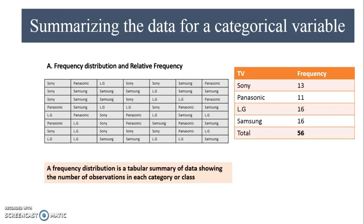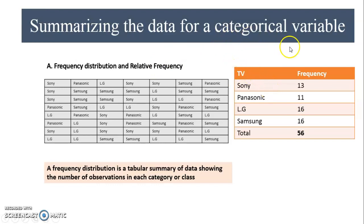Frequency distribution is a tabular summary of data showing the number of observations in each category. This tabular summary has the TV brand as the first column — Sony, Panasonic, LG, and Samsung — and frequency shows how many times each brand appeared in the sample. We manually counted all occurrences of each brand and recorded the frequency. This is the frequency distribution, which helps summarize categorical variables.